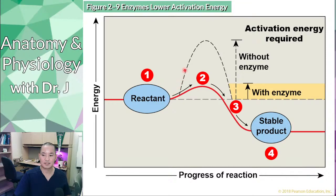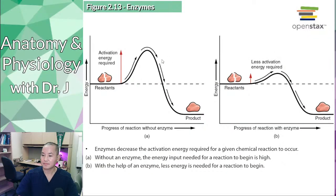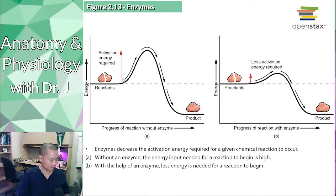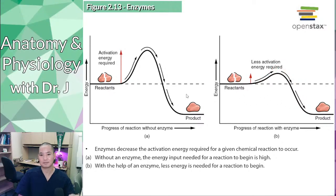I like to think of it like pushing a car over a hill. Without the enzyme you need more energy to push a car up a steeper hill, whereas with the enzyme it's like a smaller hill with less of a slope — you need less energy. Enzymes lower the energy required to push the reaction to its products.